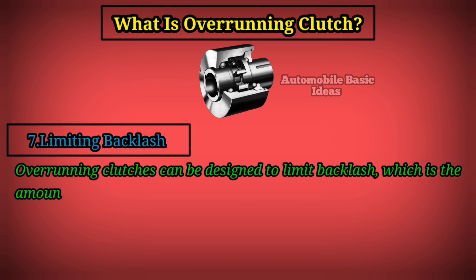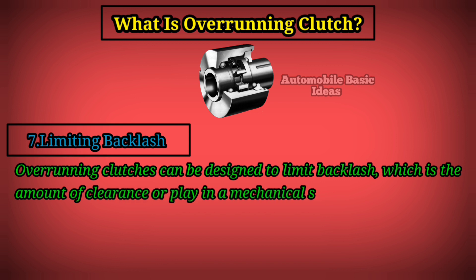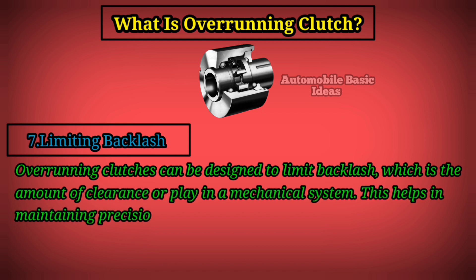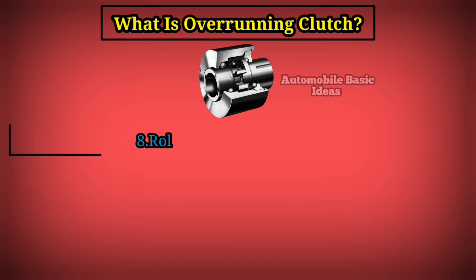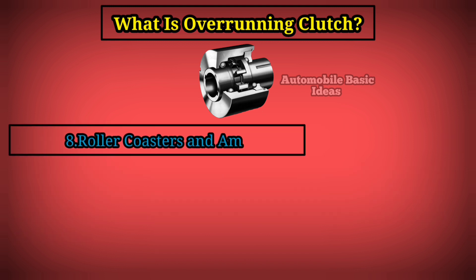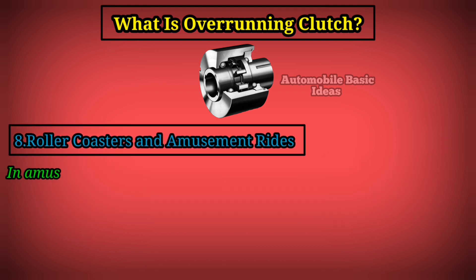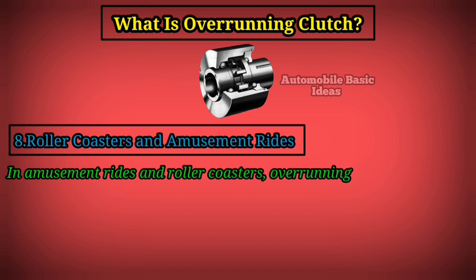Seven, limiting backlash. Overrunning clutches can be designed to limit backlash, which is the amount of clearance or play in a mechanical system. This helps in maintaining precision and reducing the impact of sudden changes in direction.